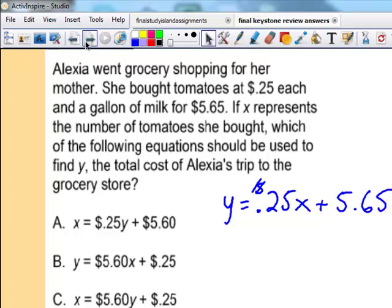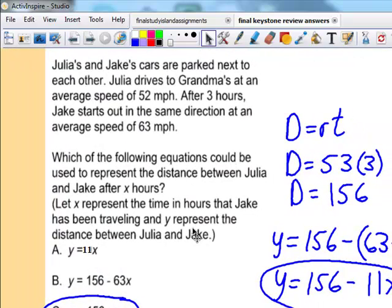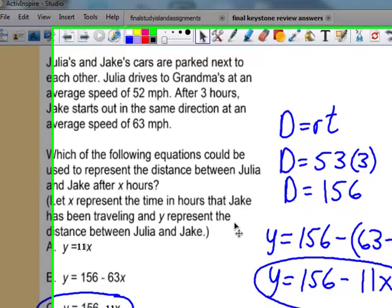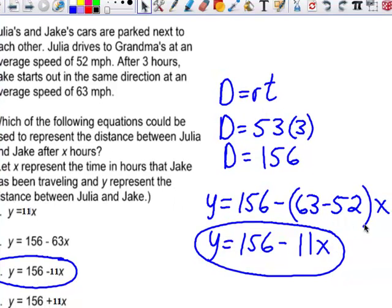Next question. This one we are dealing with D equals RT. If you go to my website, one of the first videos that I did was on D equals RT - distance equals rate times time. This one, the girl actually has a 3 hour lead. She's going 52 miles per hour. You multiply that, you can see her distance. So before Jake even takes off, she's 156 miles away.